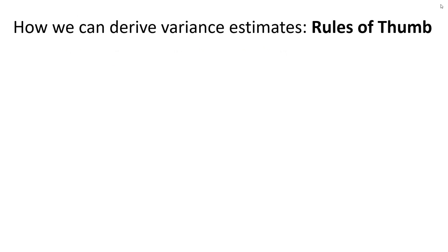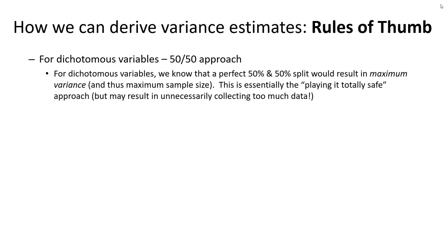For rules of thumb to derive variance estimates, the simplest one for a dichotomous variable is the 50-50 approach. If we have nothing else to go off of, we simply assume a 50-50 split in the population. This is playing it totally safe — at worst, we'll collect more data than required if it turns out the actual percentage has less variance than 50-50.